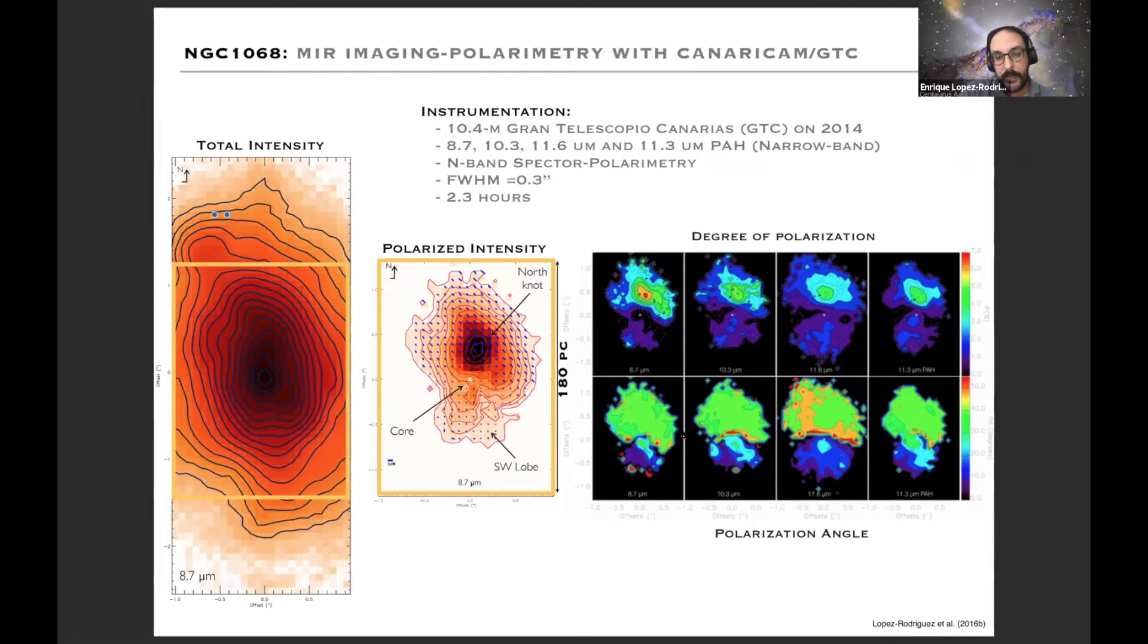The interesting part here is in the position angle in the second row. You have the north always with the same position angle and the south has a different position angle but the same as a function of wavelength, different position angle than the north.